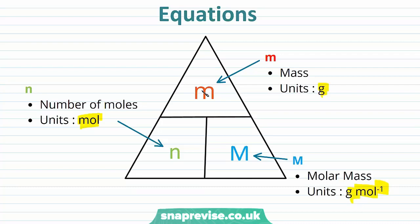These types of triangles are really useful ways to remember your equations, allowing you to manipulate them. The way you use it is you cover up the letter that you are looking for, and you see the relationship of the other two letters. So for example, if we were looking for the number of moles and we covered that up, we'd see that the number of moles is equal to the mass divided by the molar mass.